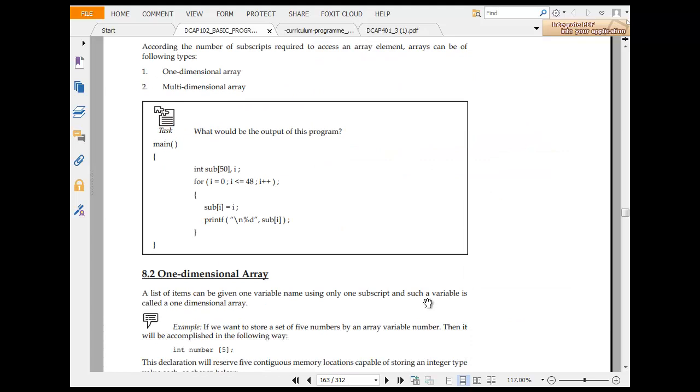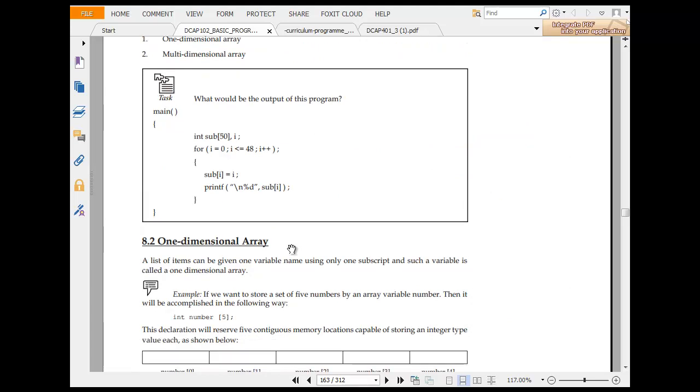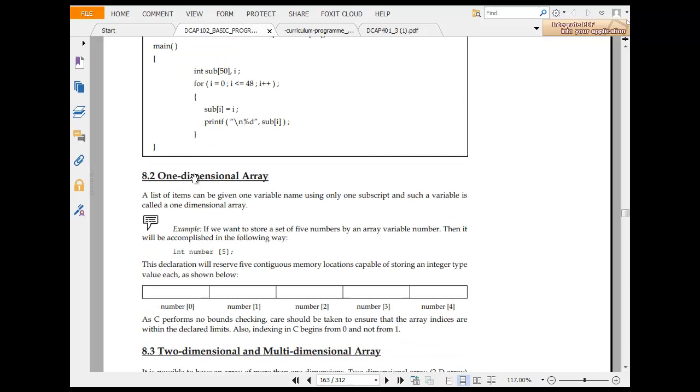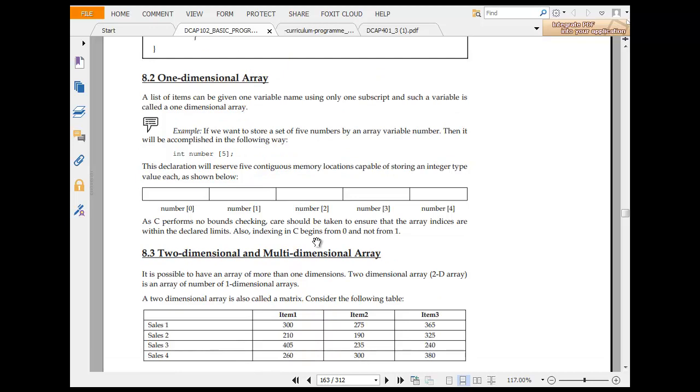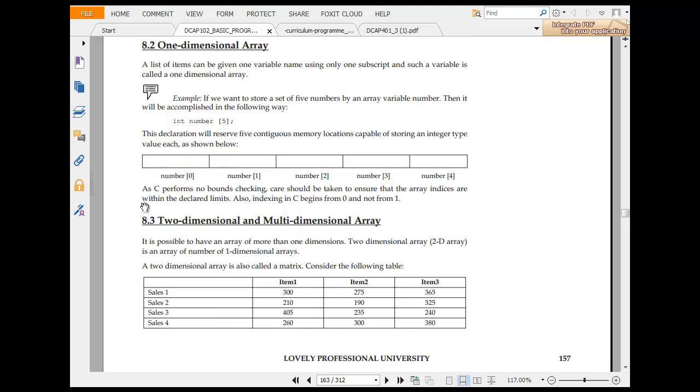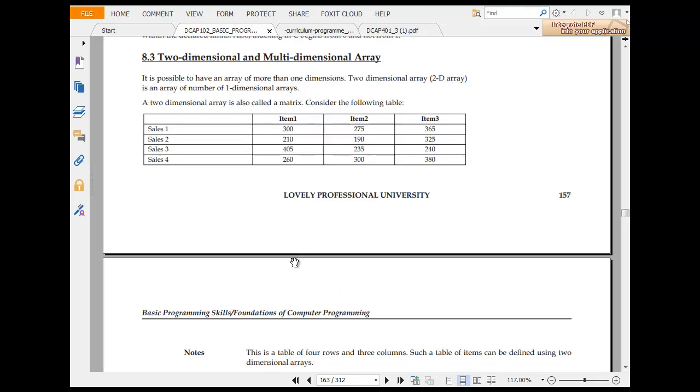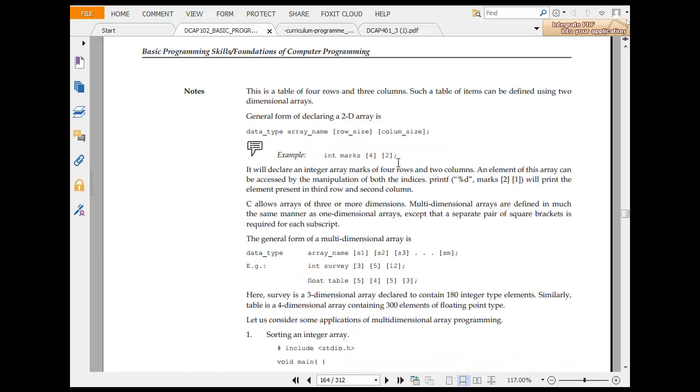Types of array, one dimension and two dimension. Printf and d, one dimensional array. Now one dimensional array can be given a variable name such that the variable is called one dimension. Like, 1, 2, 3, 4, 5, 6, 7, 8, 9. Two dimension arrays, you have two items. So marks, 4 by 5.